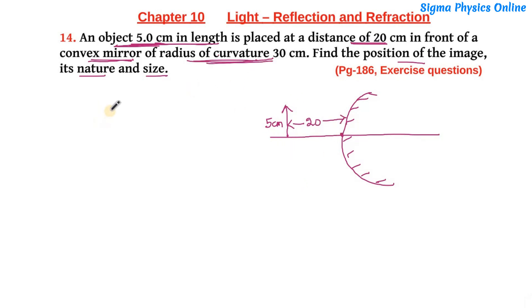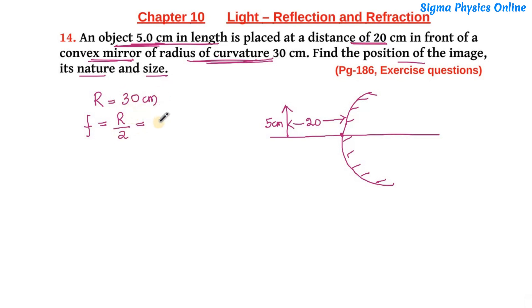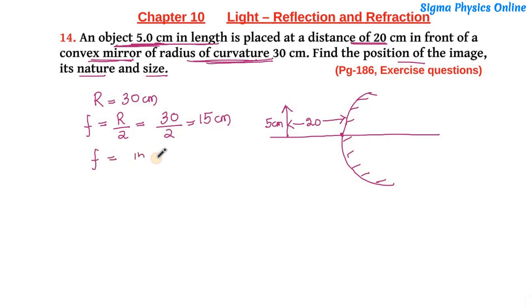The radius of curvature of this mirror is given as R = 30 cm. We know that the focal length of the mirror is half of the radius of curvature. So substituting the value of R, we get the focal length as 15 cm. The focal length of this mirror is 15 cm.